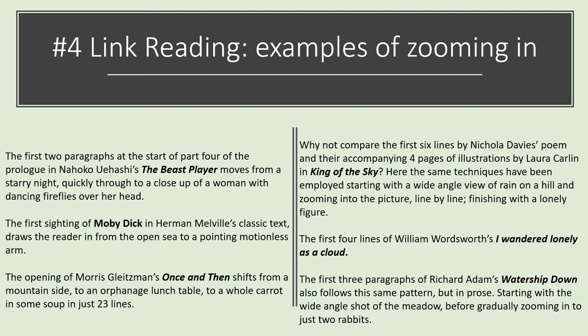Activity four. Once you spot this kind of strategy, you start to see it everywhere. Here are some ideas about where you might find great examples — and just like when we watched the film, we don't have to read a massive amount. In The Beast Player, you could read just the first two paragraphs of part four of the prologue. The first sighting of Moby Dick in Herman Melville's classic text draws the reader from the open sea to a pointing motionless arm. Or in Once and Then by Morris Gleitzman, we go from a mountainside to an orphanage, a lunch table, and then to a whole carrot in some soup in just 23 lines — zooming right in.